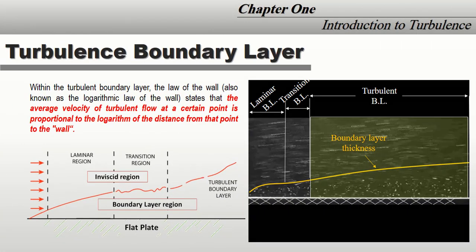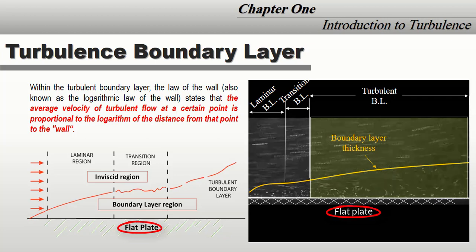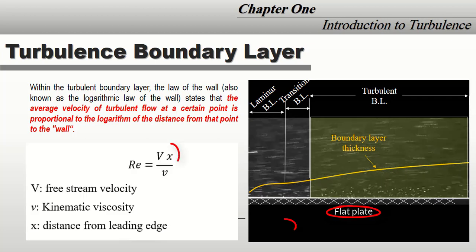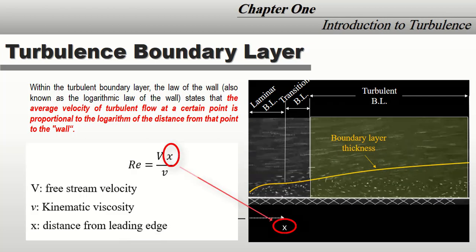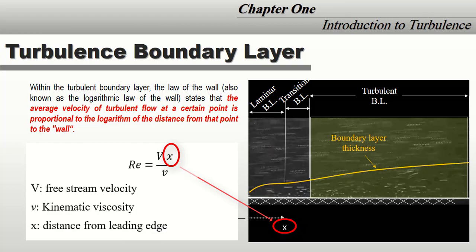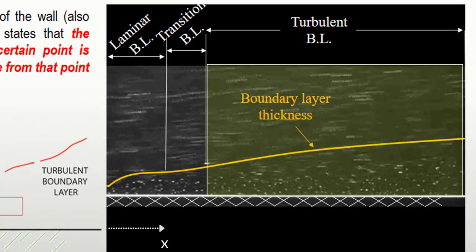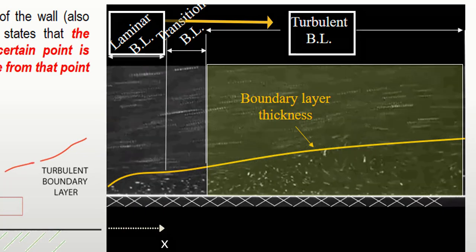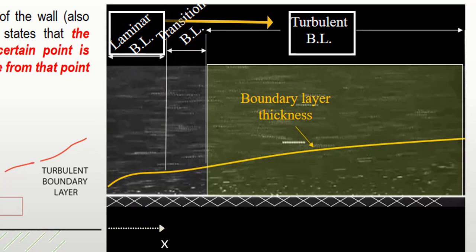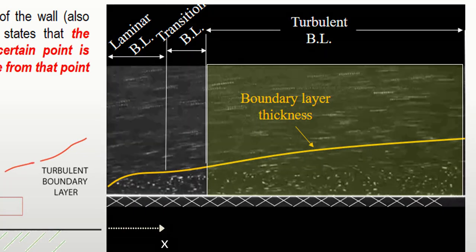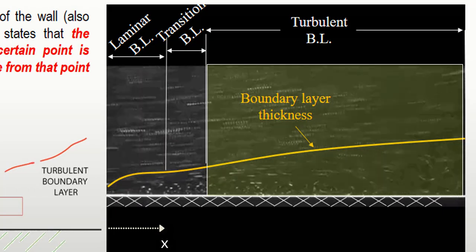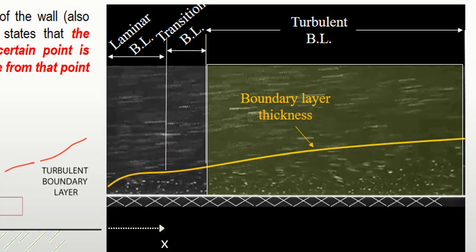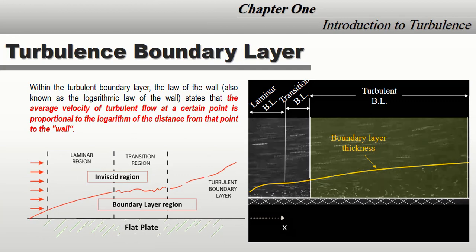Now, for flow over a flat plate, which is a very common example, when the Reynolds number depends on X (the distance from the leading edge), the flow shifts from being laminar to becoming turbulent. How this is physically done—how the flow changes from laminar to turbulent—is what we will discuss next.